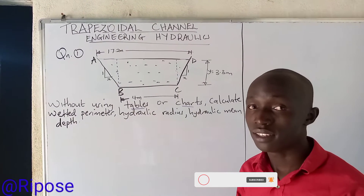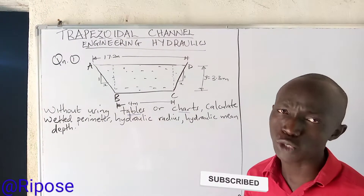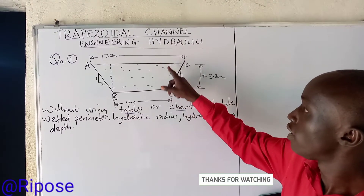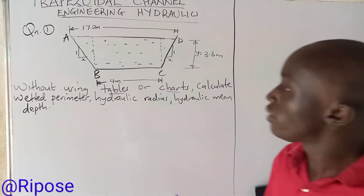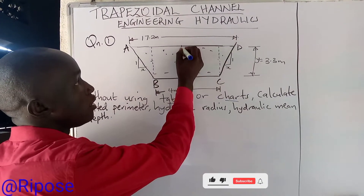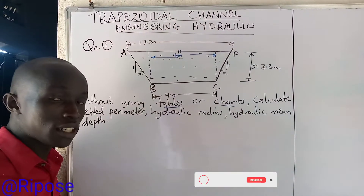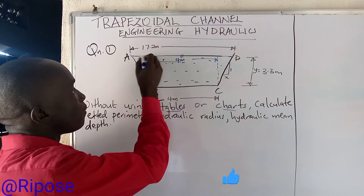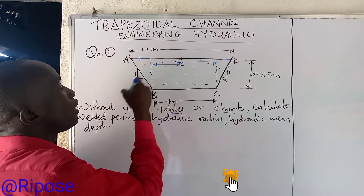This is going to be done without any tables, without any calculator, from first principles. We are not given this dimension here — from here to here — so we shall calculate using first principles. Our bottom width BC is four meters. The same applies on this side, also four meters. Now this side and this side are the same. Let this dimension be x.